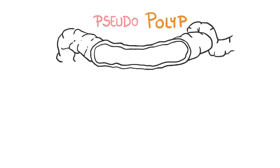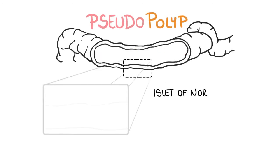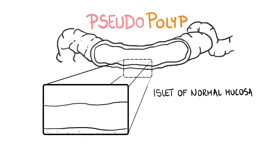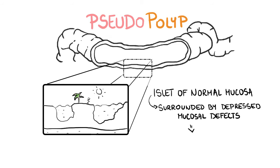The term pseudopolyp describes an islet of normal mucosa surrounded by depressed mucosal defects. Despite looking elevated, the polyp is in fact a residual intact mucosa.